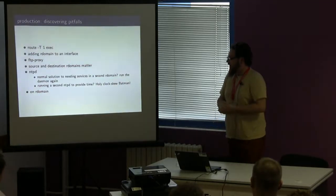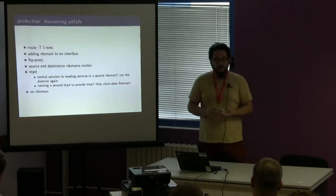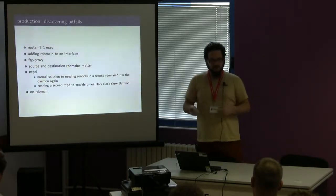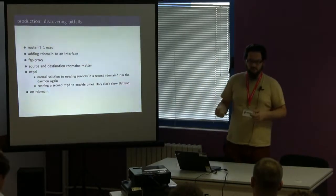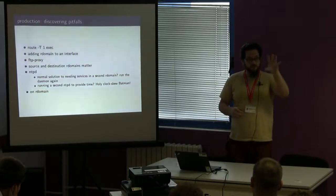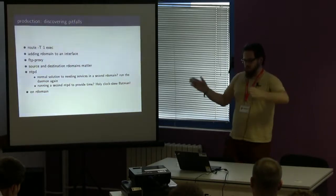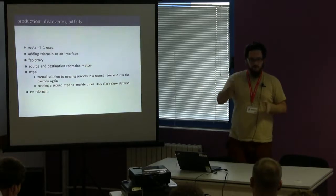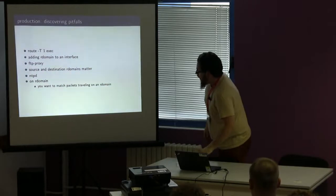So I added quite a bit of configuration options to NTPD that allow you to, for each of the individual listen, server, peer, whatever, to individually select which routing domain that it's using. So you just run one NTPD and then you set up all your configurations. So you want to listen only on the external on routing domain 20, but you want to have individual services on routing domains 3, 4, 5, and 6.